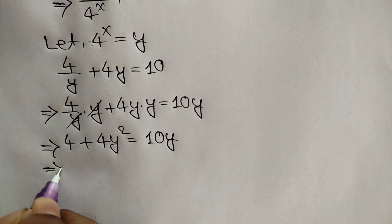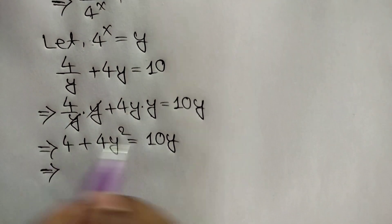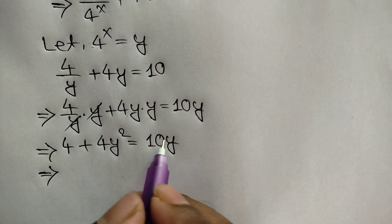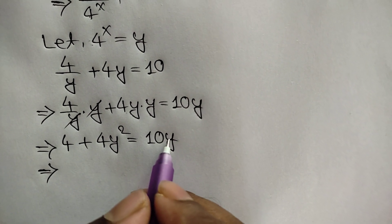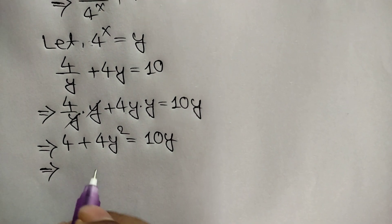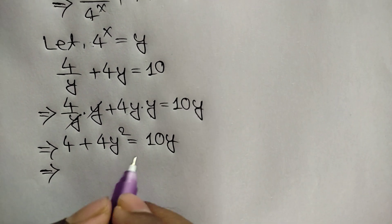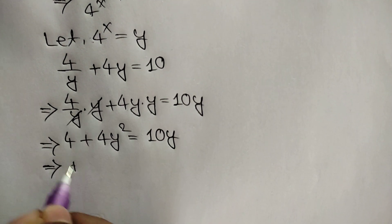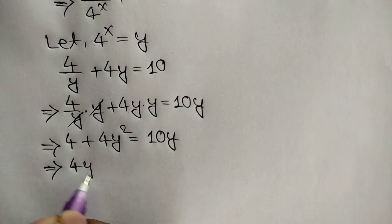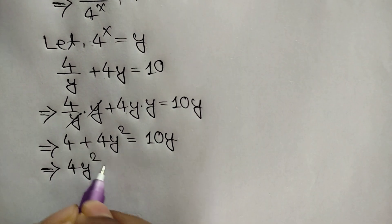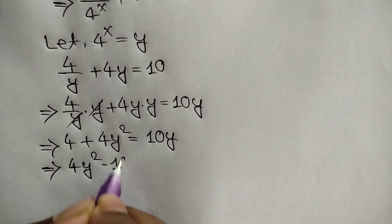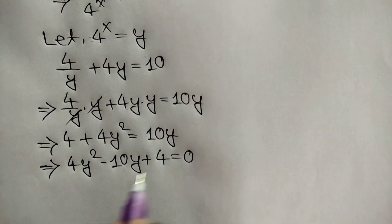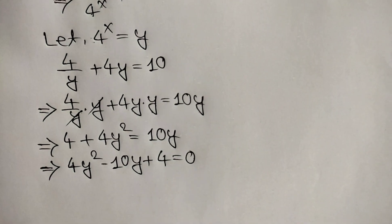Taking 10y to the left side we get negative 10y, so we can write 4y squared minus 10y plus 4 is equal to 0.